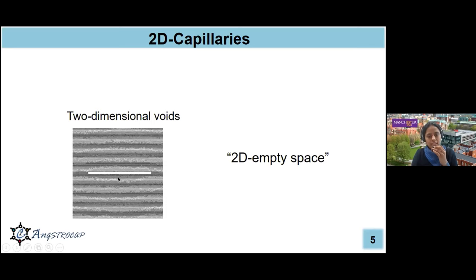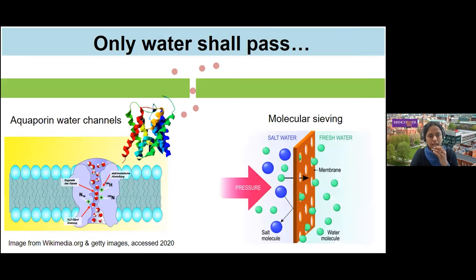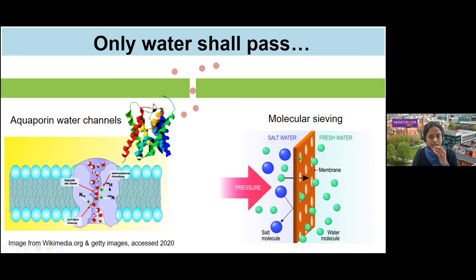This is the 2D capillary I'm going to talk about, which is made up of 2D materials. Why is it interesting? Why am I interested in such confined space? There are two motivations. One comes from nature: there are protein channels present in cellular membranes which have constrictions of angstrom-scale dimensions — similar to the two-dimensional empty space I'll discuss.